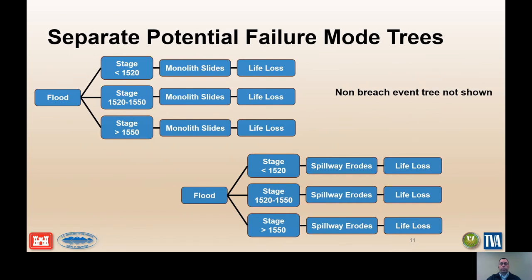Event trees are typically created for each potential failure mode to develop a system response curve, which is the conditional probability of failure as a function of the loading. An event tree analysis can also be performed for individual potential failure modes to combine the hazard, or loading, with the performance, or the system response curve, to assess the significance of each potential failure mode individually, assuming the potential failure modes are mutually exclusive — in other words, cannot occur together. In reality, potential failure modes are often not mutually exclusive, so the intersection of the two potential failure modes must be accounted for. This is discussed in Chapter A8, Combining and Portraying Risks.